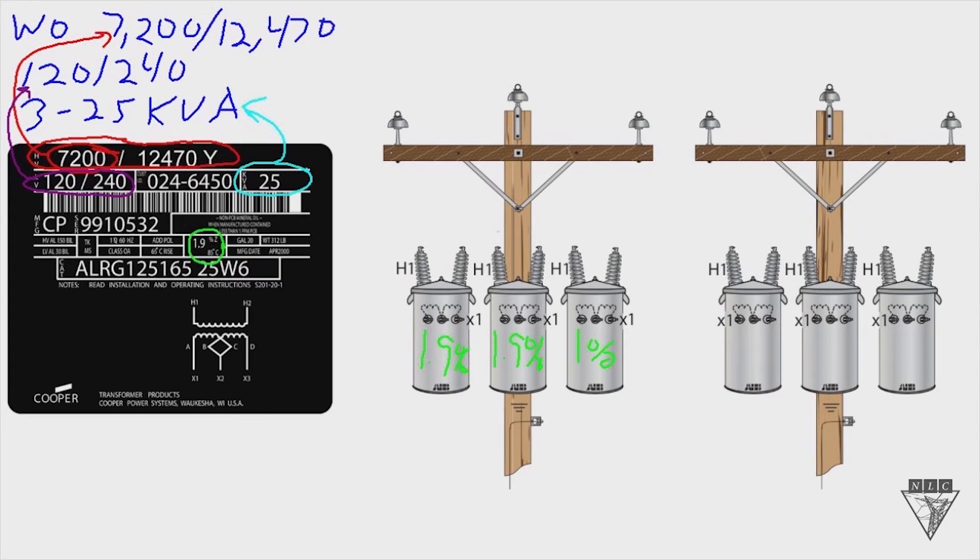The reason why this is important to try and get three transformers that the impedance is very close together is this one transformer over here that's at 1% is going to take on more of the load. Because remember when I said when you think of impedance, think of resistance. Well if it's got less resistance, then it's going to pack more of the load. It's going to take on more of that load, which could overload that transformer and make it fail.